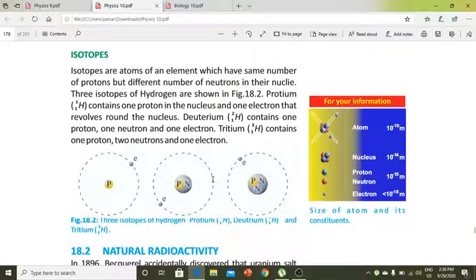Isotopes are atoms of an element which have the same number of protons but different number of neutrons.